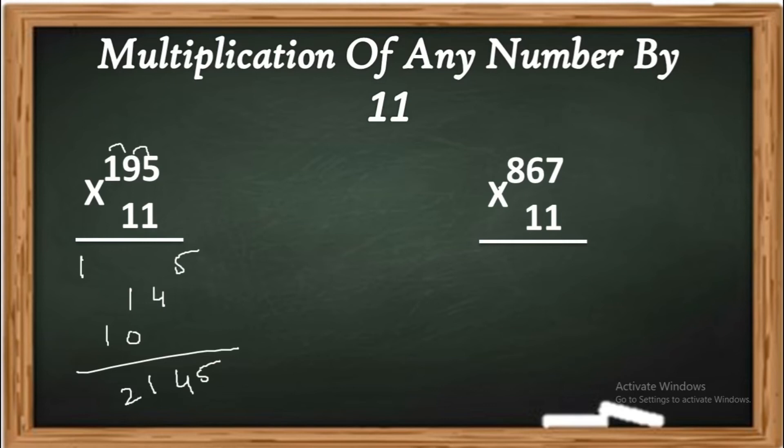Okay. Next, go for 867 into 11. 7 as it is 7, and 8 as it is 8.